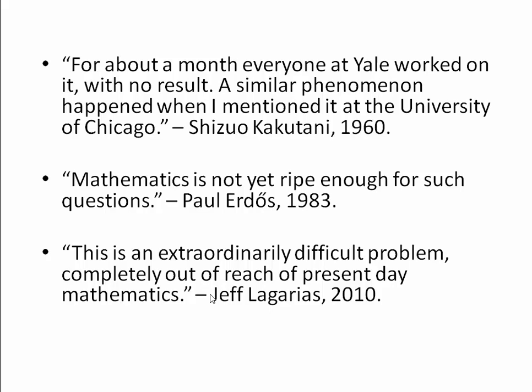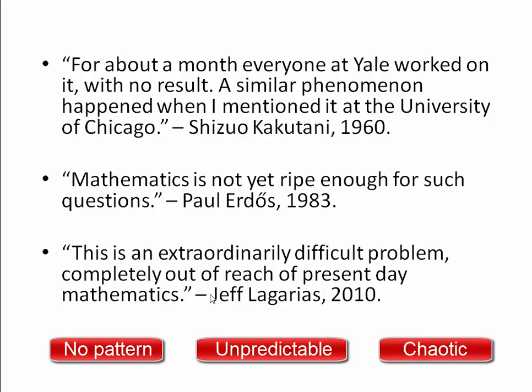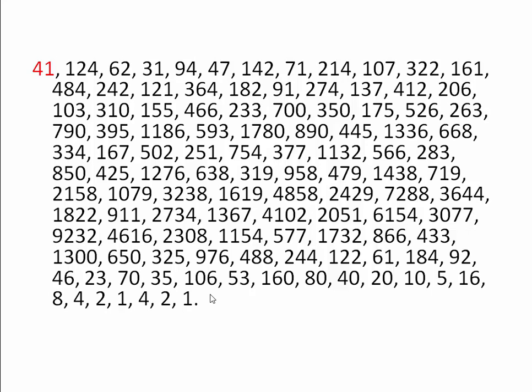Some numbers converge to 1 quickly, like 5, while others rise and fall several times over before finally reaching 1. Take 41 for example. This is its trajectory. It has more than a hundred iterate steps.